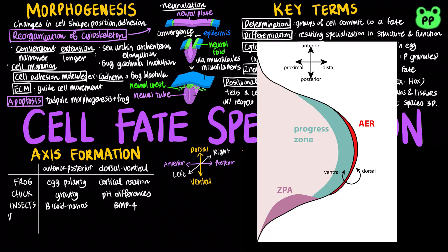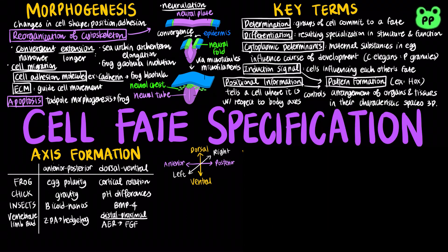In vertebrate limb bud, ZPA or zone of polarizing activity regulates development along the anterior-posterior axis of the limb by producing the protein Sonic Hedgehog, whereas AER, or apical ectodermal ridge, regulates the development of the proximal-distal axis by secreting a protein signal called fibroblast growth factor, or FGF. Scientists Spemann and Mangold conducted experiments on amphibian embryos to investigate cell fate determination during gastrulation.